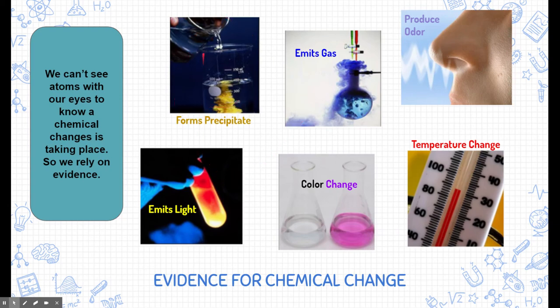The first one is forms of precipitate. If we mix two things and we get a solid substance coming out, this is called a precipitate. This is an example of evidences that a chemical change is taking place. If we mix substances and it emits a gas where there was no gas before, that's evidence that a chemical change is taking place.